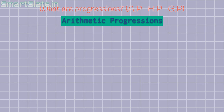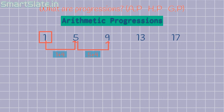Let's consider an example: 1, 5, 9, 13 and 17. The first element is a random number. The second element is obtained by adding 4 to the first element. The third element is obtained by adding 4 to the second element. The fourth element is obtained by adding 4 to the third element. Similarly, the fifth element is obtained by adding 4 to the fourth element.